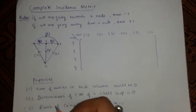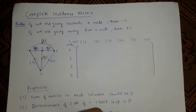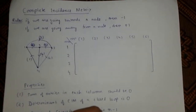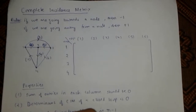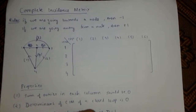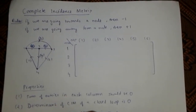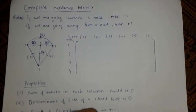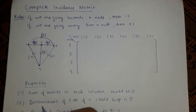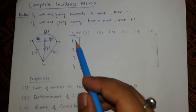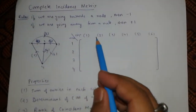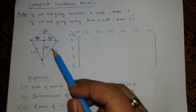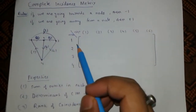Hello everyone, we are going to learn about the complete incidence matrix in network topology. This is a part of circuit theory. We have some rules. These are all edges of that specific graph and these are the vertices.